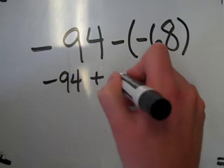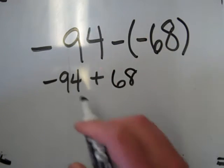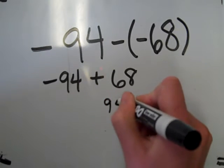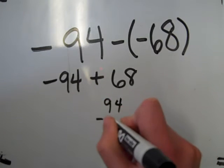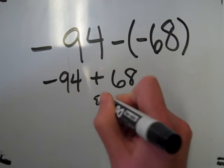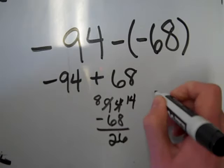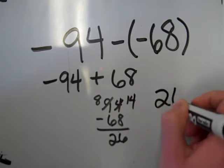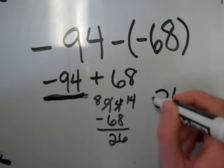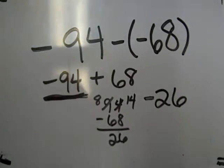The opposite of negative 68 is positive 68. These signs are different so I'm going to subtract: 94 minus 68 equals 26. Now the greater absolute value is 94 and that's the negative number, so the answer is negative 26.